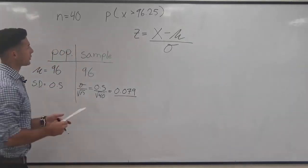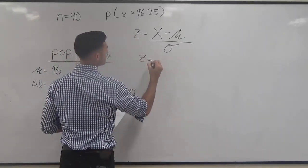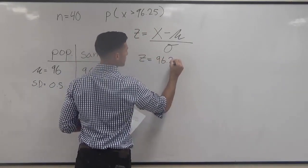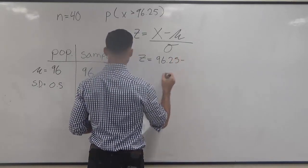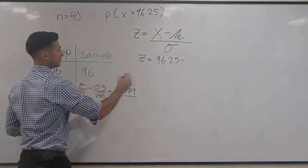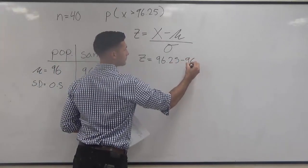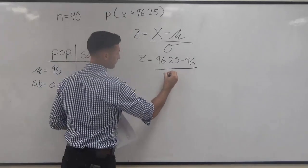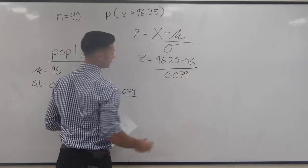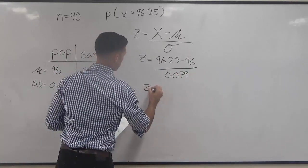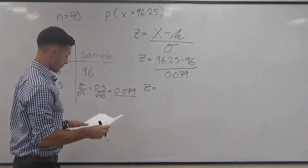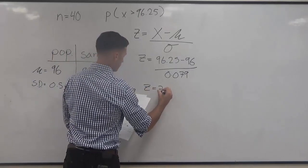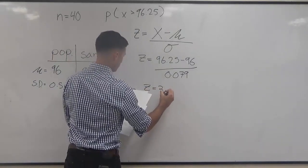So now we're all good to plug into the equation. Z equals x, what we're looking for here, 96.25 minus our sample mean divided by our new standard deviation. And when we complete that, based off order of operations, we end up getting a Z of 3.13.